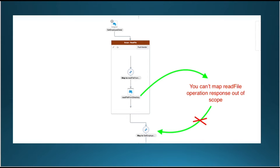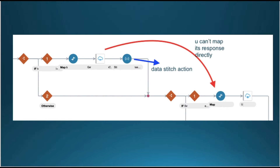Another scenario is where you are going to use the read file operation within a scope, but you want to map the read file operation output to outside of the scope. In that scenario you would use the data stitch action. Also, you can map a response from one switch flow inside another switch flow by using the stitch action. This example we can see in other practical sessions.